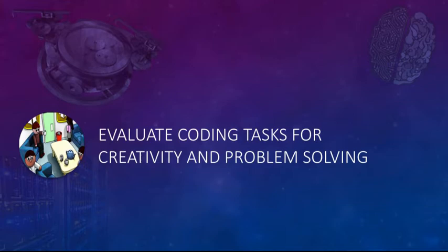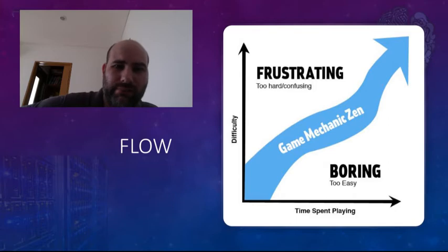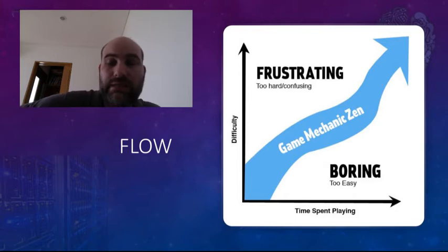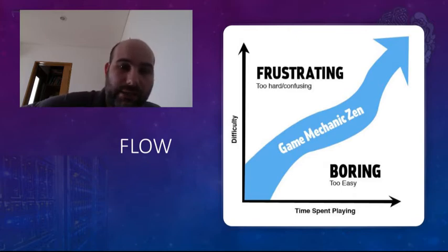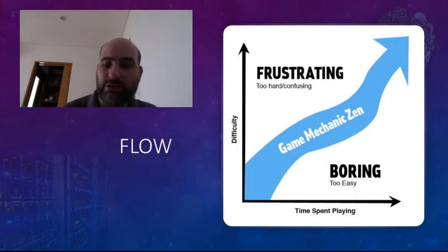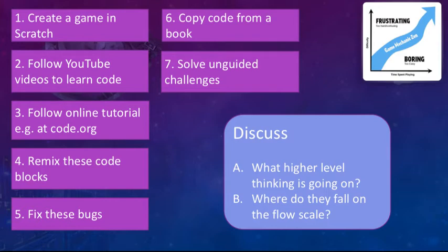Evaluate coding tasks for creativity and problem solving. My favourite mechanism is flow — this idea used throughout computer games. Something that's too hard or confusing is frustrating; something that's far too easy is boring. The game mechanic basically tries to get students in the middle, so you don't make it too hard. It's an amazing model and it really helps when you're teaching computational thinking or maths. Have a look at these tasks and decide what high-level thinking is going on and where they fall on this flow scale.